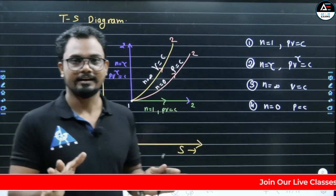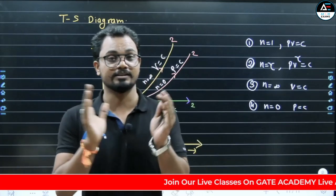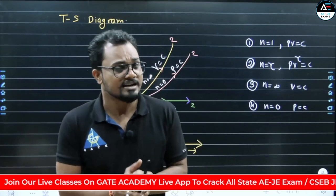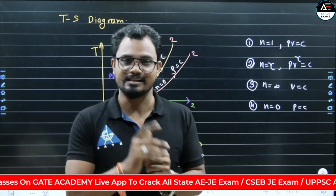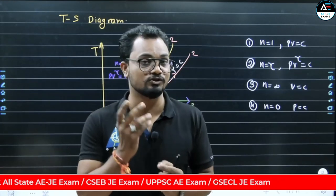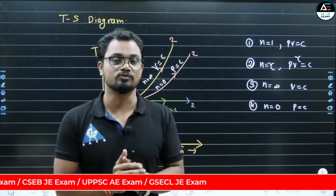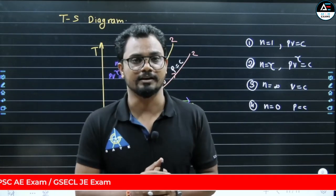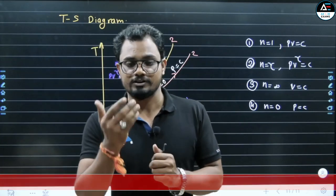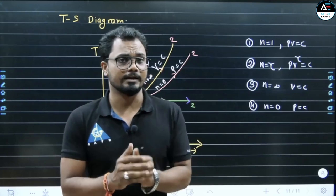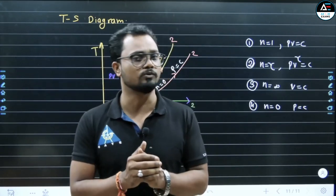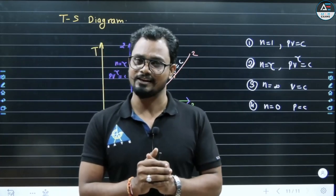So now you understand how various types of processes are drawn and how polytropic index values are substituted — that is a small concept and big dhamaka! We will take this concept further. There are many more small concepts coming your way. Wait for the next video, and please like and share this video. If you feel you need a video on any topic, let us know in the comment box. See you in the next video — thank you very much!